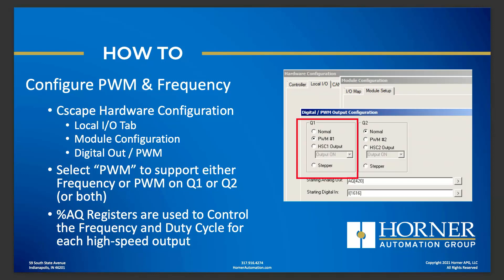To configure a PWM or frequency output in the OCS, we go to the local I/O tab under the module configuration for the appropriate model — model 2, 3, 4, 5, or the micro series OCS. We go to the digital output slash PWM section. Note that model 2 is relay output only, so for model 2 you'll need the HE-XHSQ output card to add high-speed output capability. From Cscape, we go into I/O configuration where we configure output type for Q1 and Q2, and select the radio button for PWM.